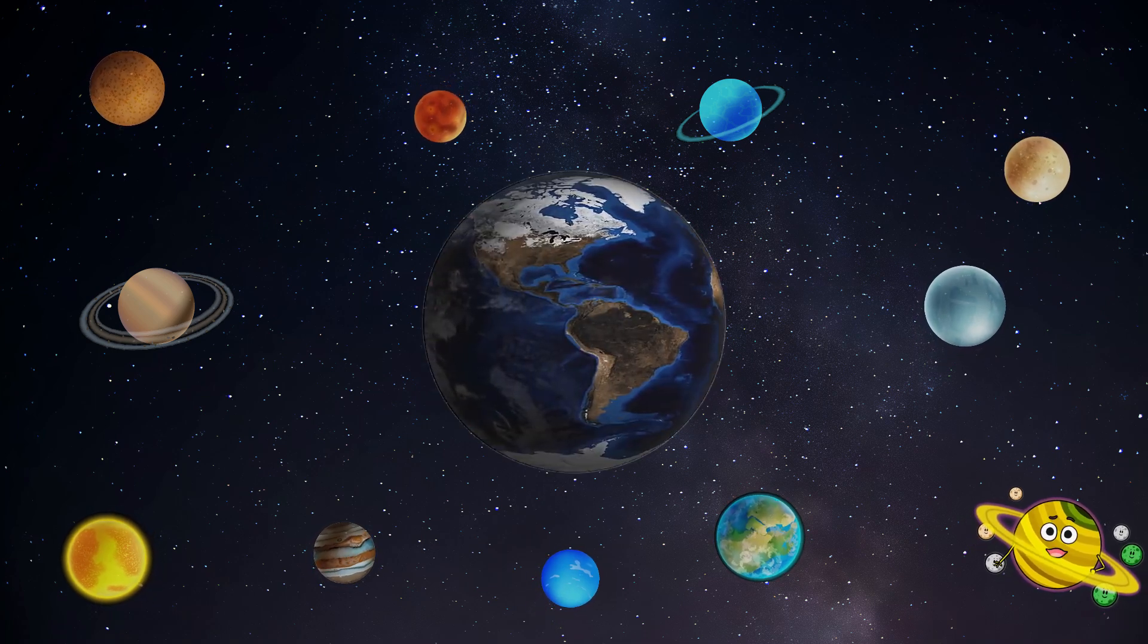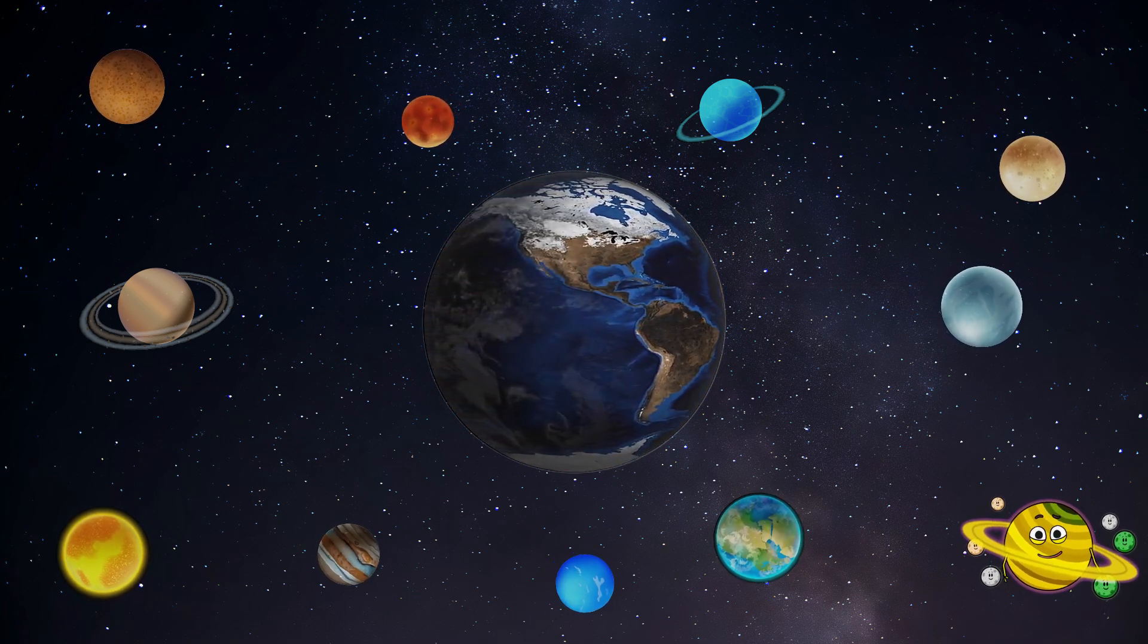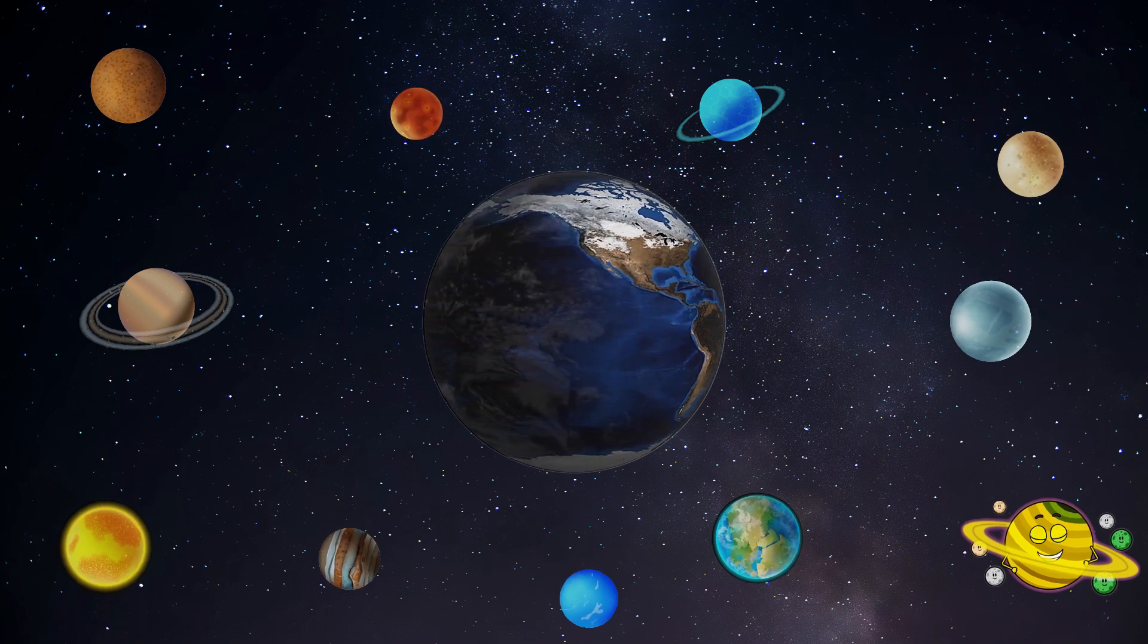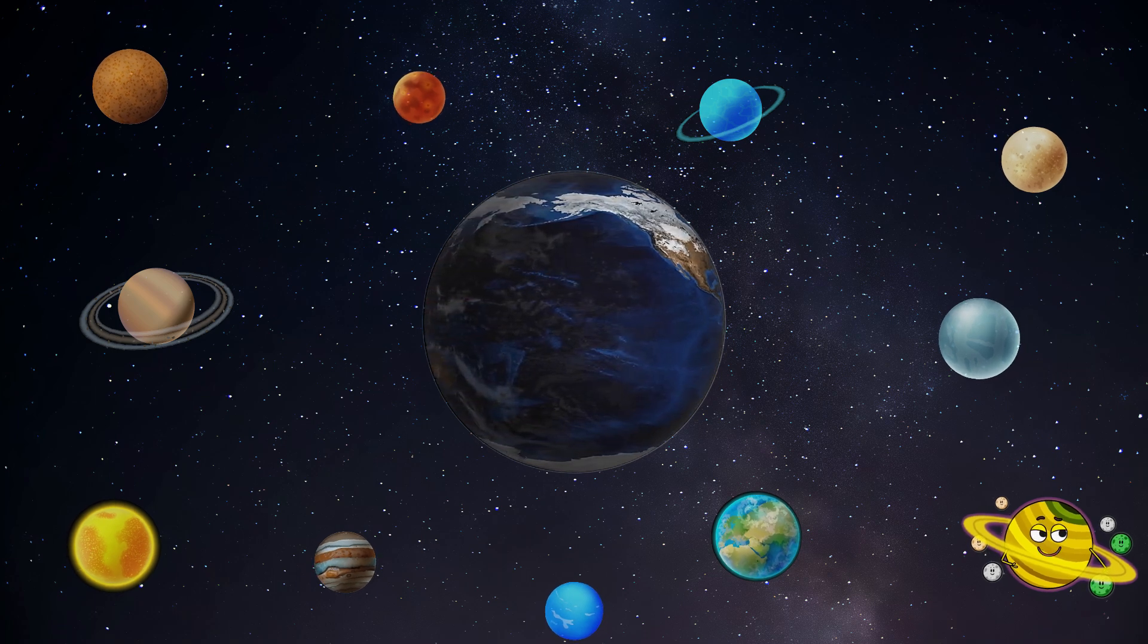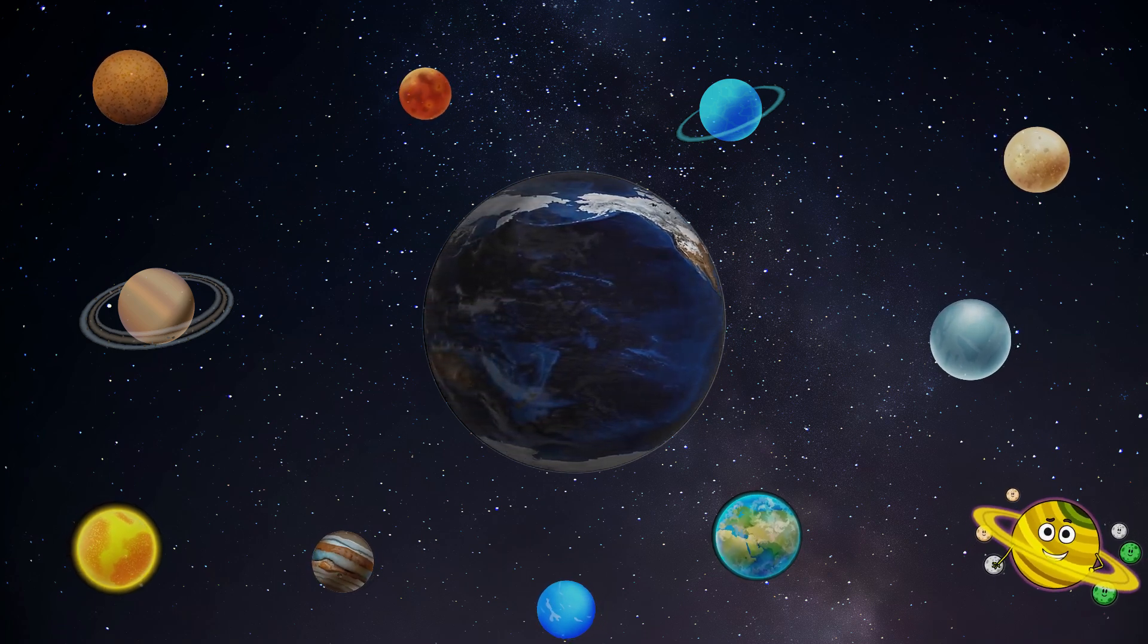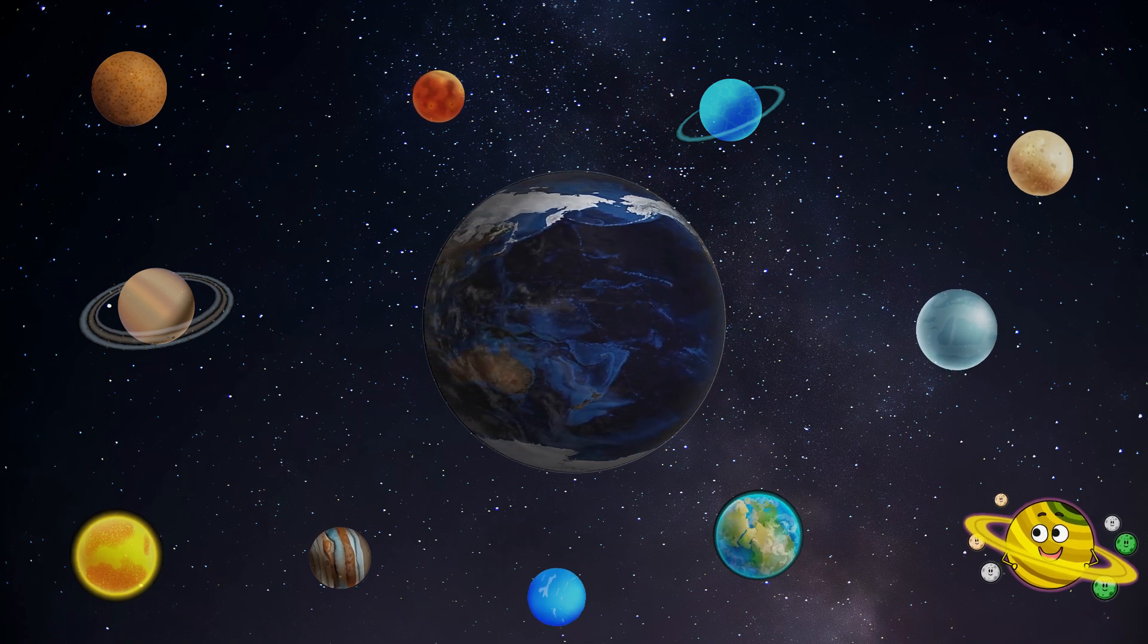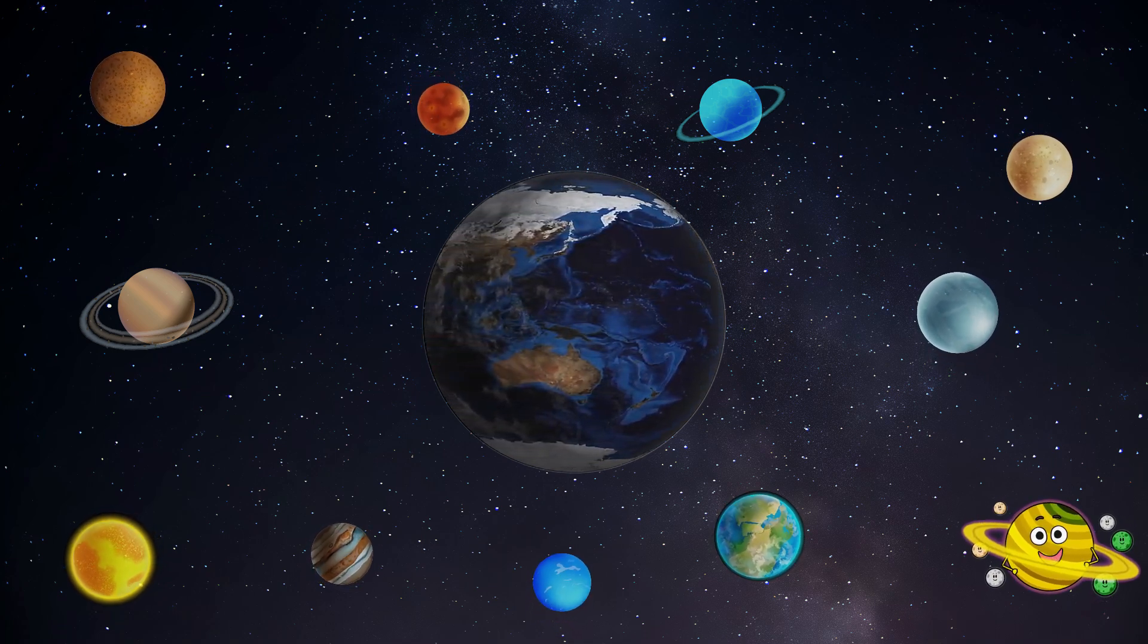And then there's Earth, our cozy home sweet home. Earth is like a giant playground filled with oceans, mountains, and bustling cities. Everywhere you look, there are trees, animals, and people having fun. Earth is the best place to be, with its blue skies, green forests, and sandy beaches. We're so lucky to live on this amazing planet.